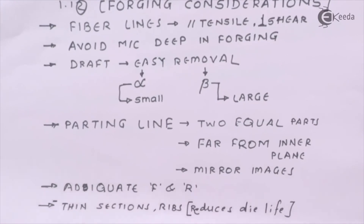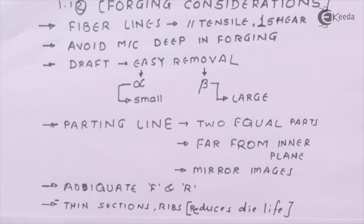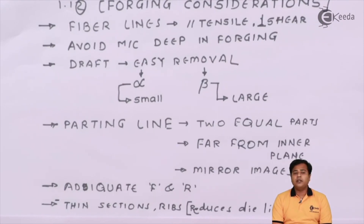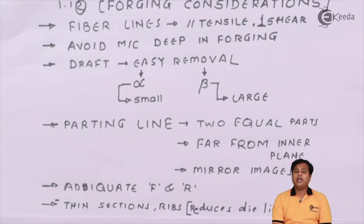The last consideration is thin sections and ribs, which is again related to cooling. If your sections are thin, the heat dissipation will be very rapid and cooling will take place very rapidly. We have to take care that cooling has a uniform speed or uniform intensity all over the forged body. If cooling happens very rapidly, it will not only create stress concentration areas in the part but also damage the dies. To avoid damage to the dies, the ribs or walls must not be thin — they should be within a proper range — allowing cooling to happen normally without harming the dies.